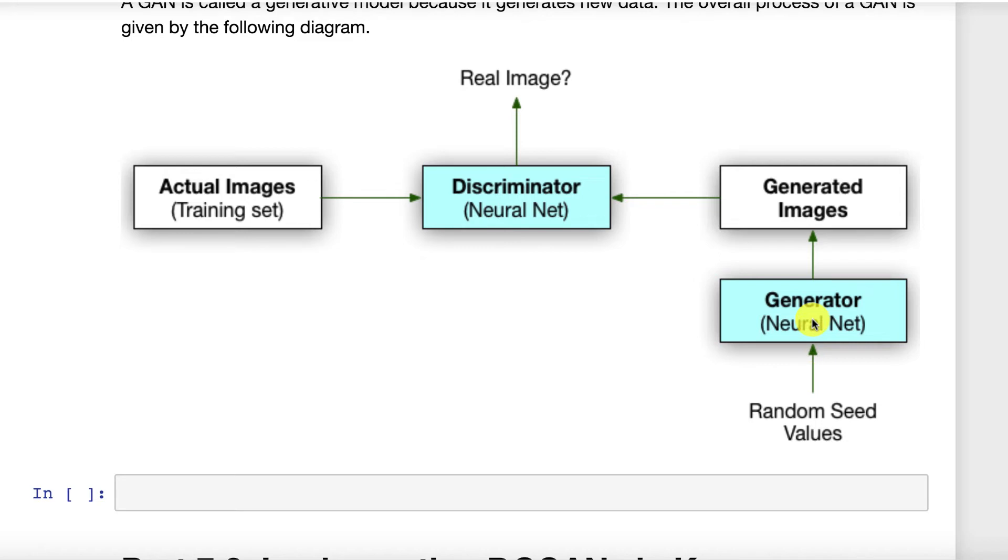Now once this is all done, you keep the generator because it generates images for you, and you likely throw away the discriminator. It was just there for the generator to practice against. We'll see that this flips for semi-supervised learning. In semi-supervised learning, we care about the discriminator, and not so much the generator. We typically throw the generator away.